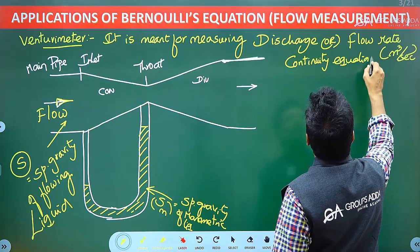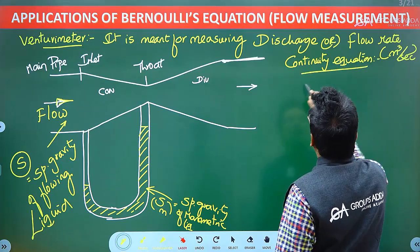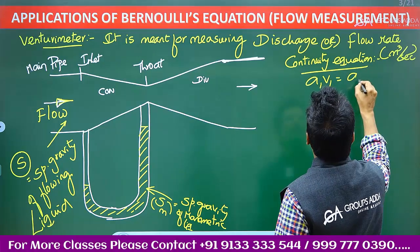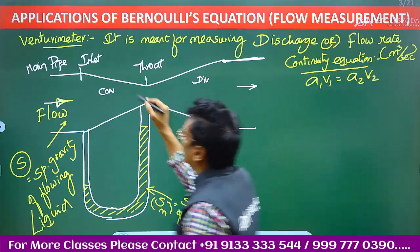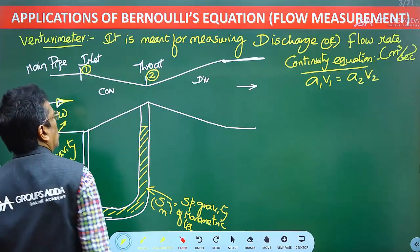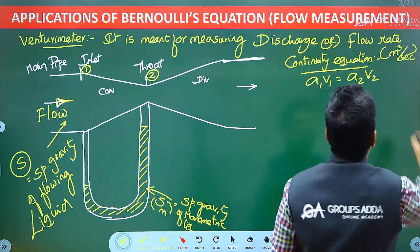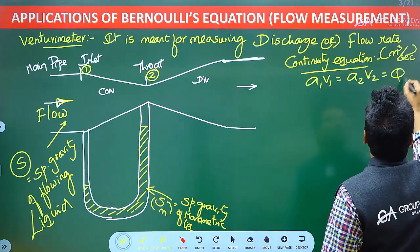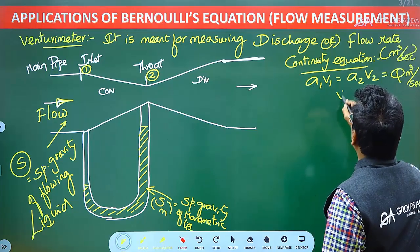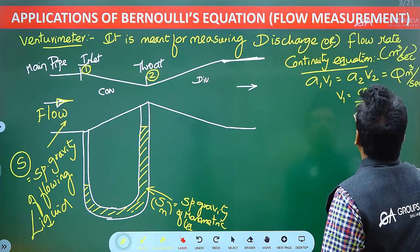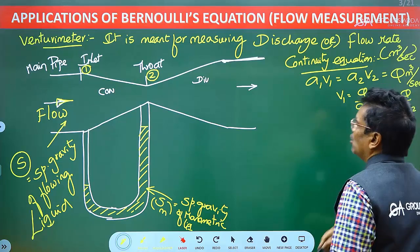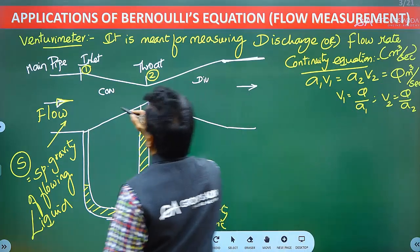According to the continuity equation, A1 V1 is equal to A2 V2, where A is the area. Section 1 is the inlet and section 2 is the throat. A1 V1 equals A2 V2, which equals discharge Q. Therefore, V1 equals Q by A1, and V2 equals Q by A2, where A1 and A2 are the cross-sectional areas at the inlet and throat respectively.